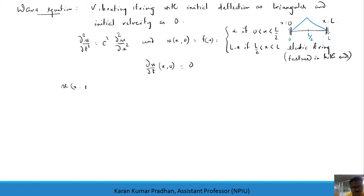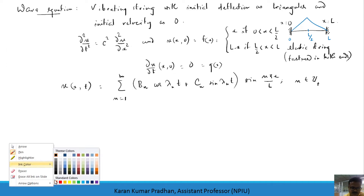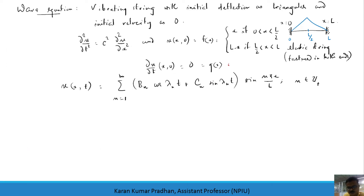The solution structure is u(x, t) = Σ (b_n cos(λ_n t) + c_n sin(λ_n t)) · sin(nπx/L), where n runs from 1 to infinity and n is a positive integer. Since the initial velocity is zero, g(x) = 0, which implies c_n = 0, and that term vanishes. So the only thing we need to determine is b_n.